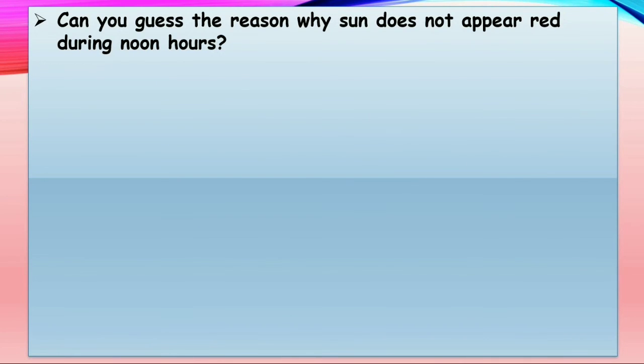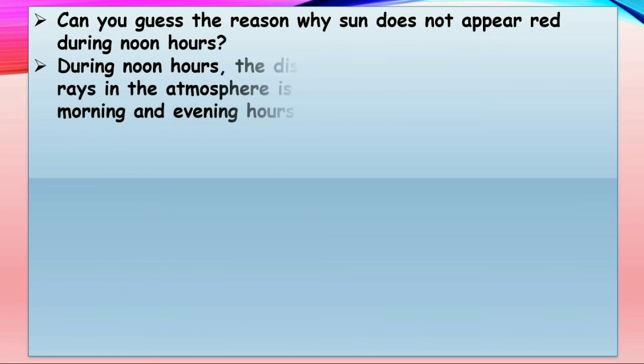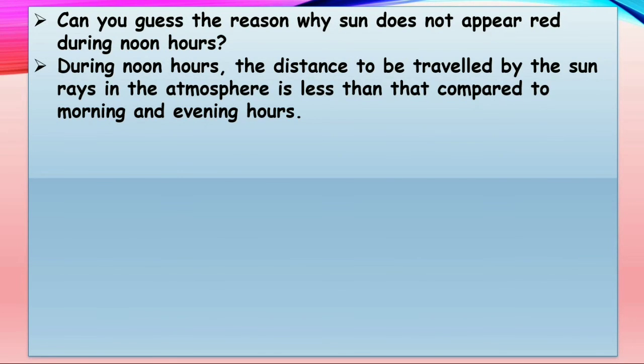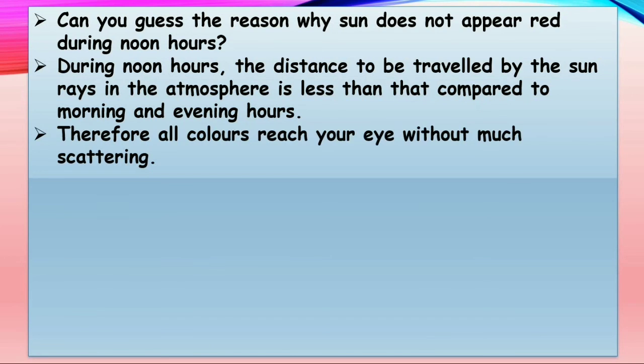Can you guess the reason why sun does not appear red during noon hours? Yes, during noon hours, the distance to be traveled by the sun rays in the atmosphere is less than that compared to morning and evening. Therefore, all colors reach your eye without much scattering. Hence the sun appears white during noon.